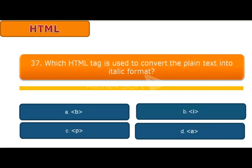Question 37: Which HTML tag is used to convert the plain text into italic format? A B, B I, C P, D A. Answer is I. I is used to convert plain text into italic format.